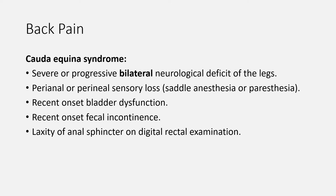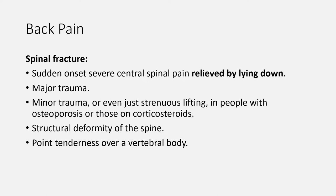Red flag symptoms and signs of cauda equina syndrome include: severe or progressive bilateral neurological deficit of the legs, perianal or perineal sensory loss (saddle anesthesia or paresthesia), recent onset bladder dysfunction in the form of urinary retention or overflow incontinence, recent onset fecal incontinence, and laxity of the anal sphincter on digital rectal examination. Red flag symptoms and signs of spinal fracture include: sudden onset severe central spinal pain relieved by lying down, history of major trauma, history of minor trauma or strenuous lifting in people with osteoporosis or those on corticosteroids, structural deformity of the spine, and point tenderness over a vertebral body.